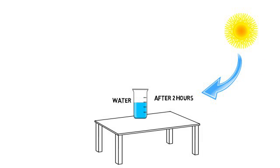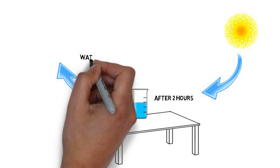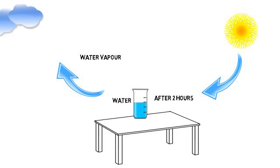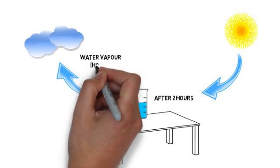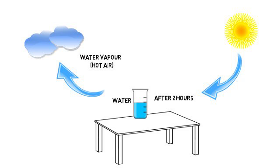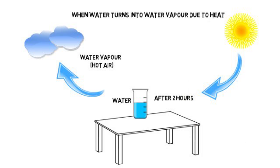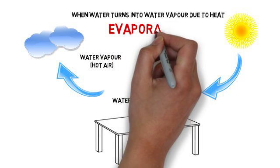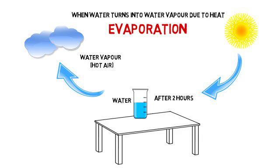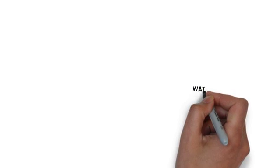The sun has heated up the water and it has turned into water vapor. Water vapor is nothing but hot air. So when water turns into water vapor due to heat, it is called evaporation.